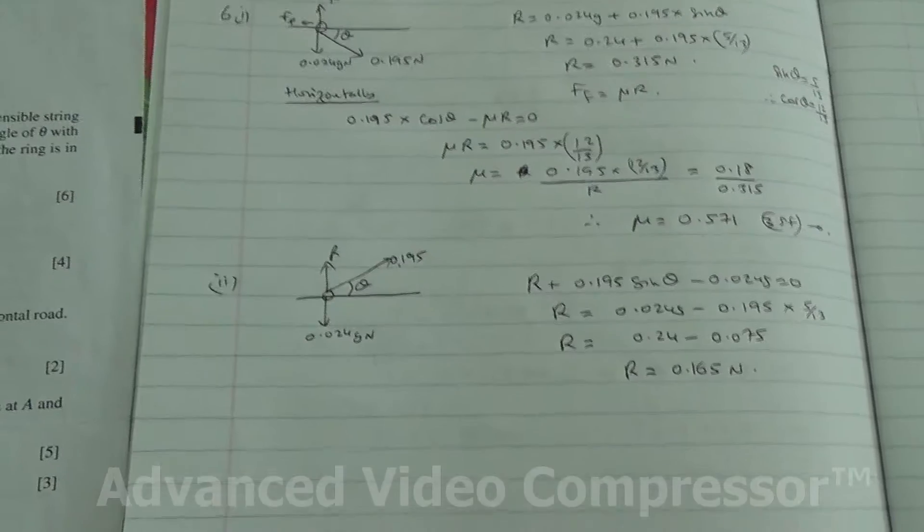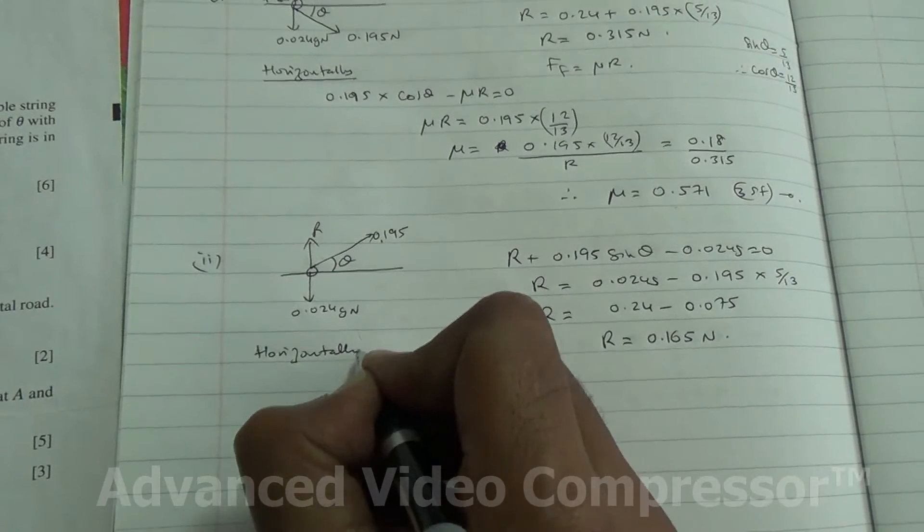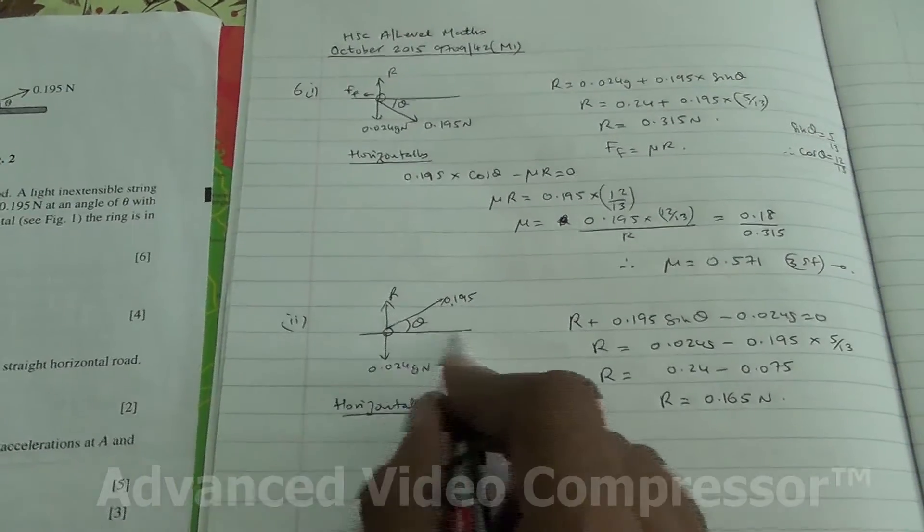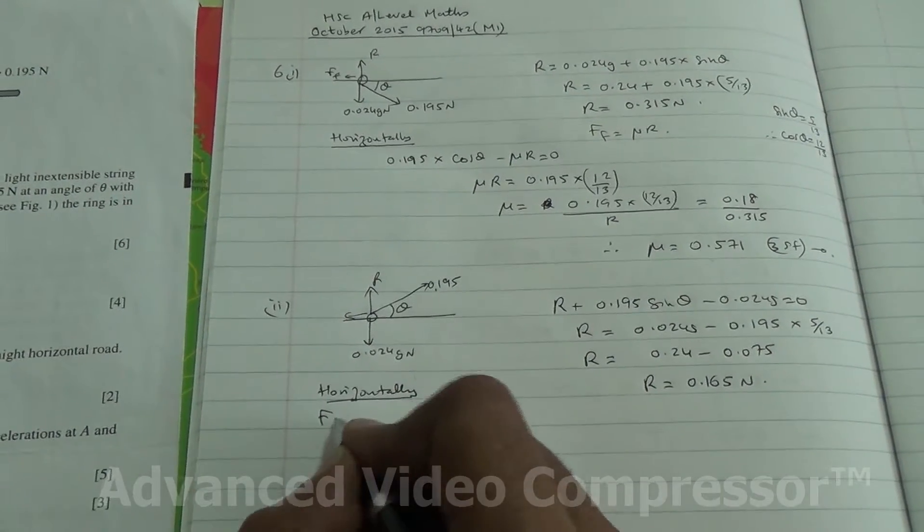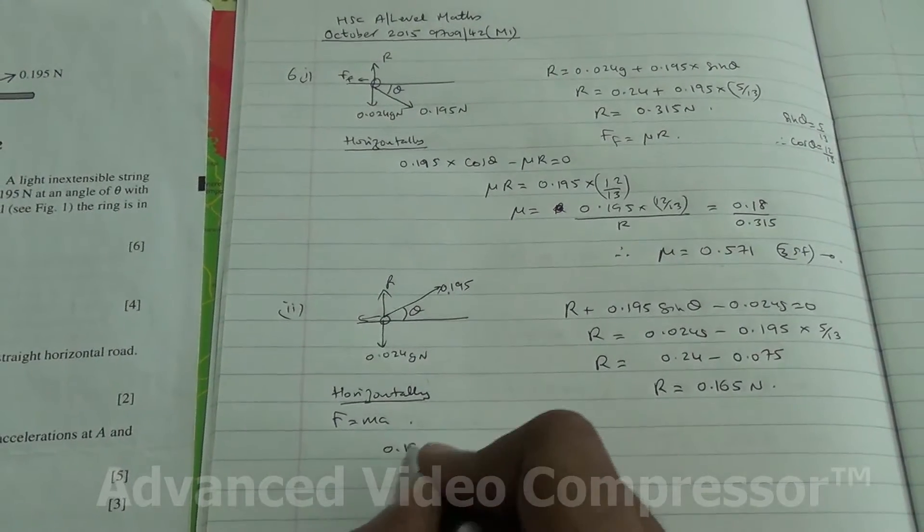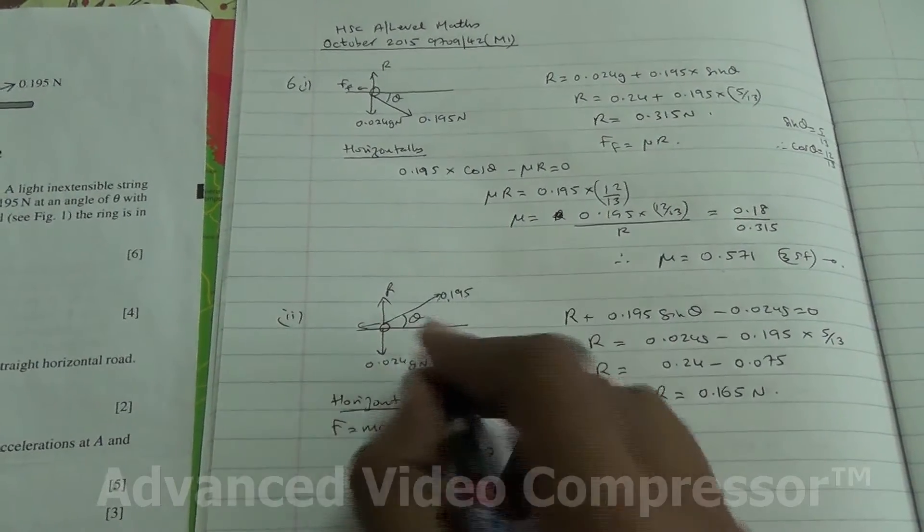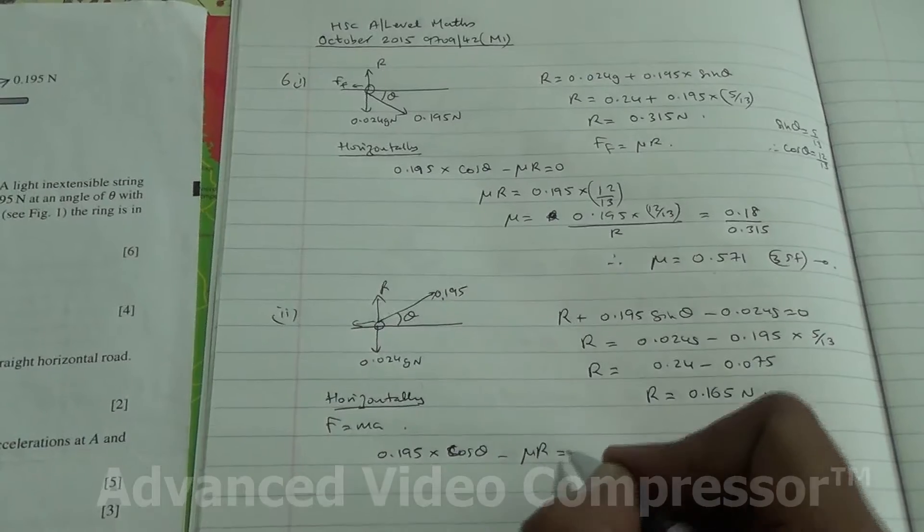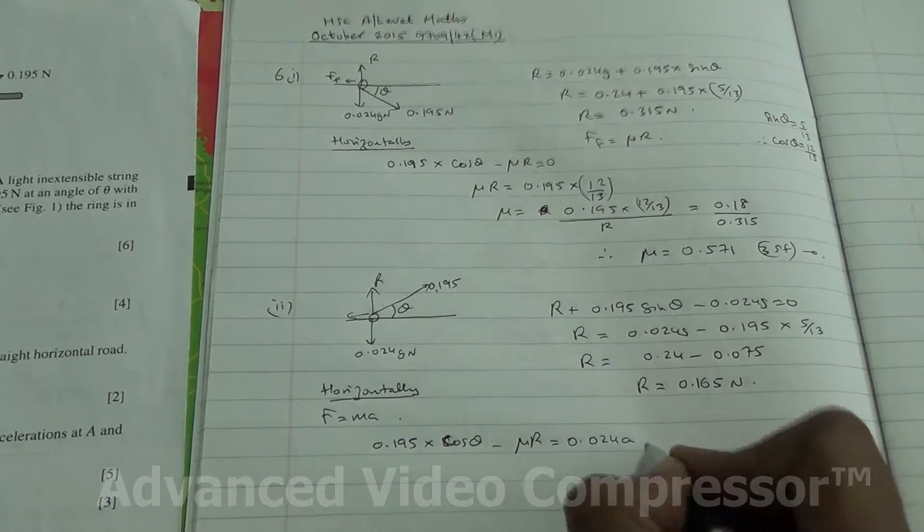Now we need to find the acceleration of the ring as it moves, so we are going to resolve now horizontally. So horizontally, what do we have? Horizontally, we have this force here, minus the force of friction. So we are going to find the net force, we should know that force is equal to mass times acceleration. What is the force? 0.195 times the cos of theta, because now it contains the angle, minus the force of friction, force of friction is mu R, is equal to mass times acceleration. The mass is 0.024 times the acceleration.